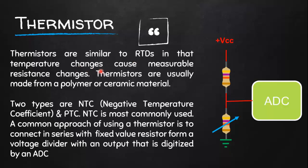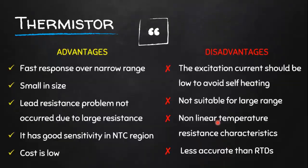Next come thermistors. Thermistors are very similar to RTDs because their resistance also changes with temperature. Thermistors are usually made from a polymer or ceramic material. There are two types: NTC, which is Negative Temperature Coefficient, meaning resistance decreases with increasing temperature, and PTC, Positive Temperature Coefficient. NTC is the most commonly used. A common approach is to connect an NTC in series with a known resistor to make a voltage divider circuit, so as temperature changes, the resistance of the NTC changes and we can measure the voltage at the common point.